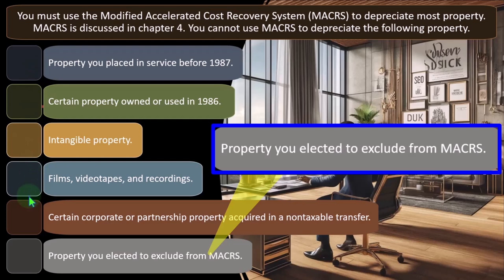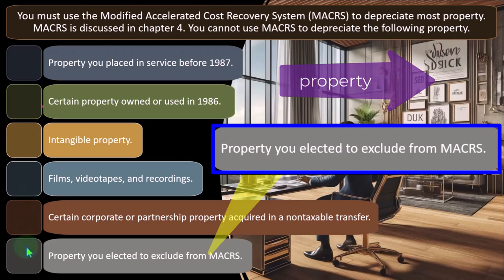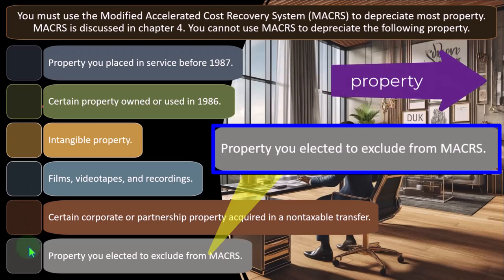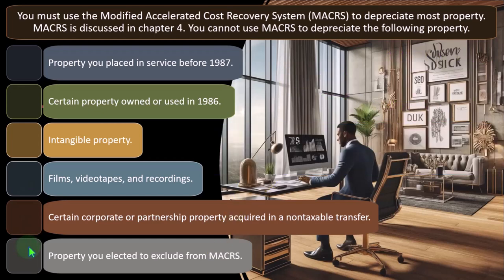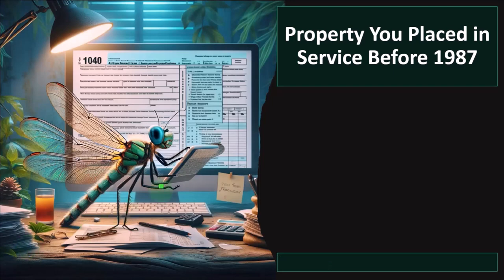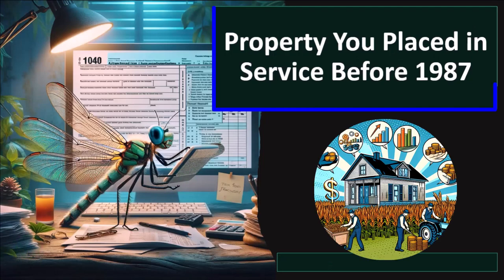These are not the most normal types of property, but possibly you can elect and say you don't want to choose MACRS. Usually you would choose MACRS because it gives you that accelerated method, but there could be situations where it would be beneficial from a tax standpoint to try to choose another method, if possible, for depreciation of a particular piece of property.